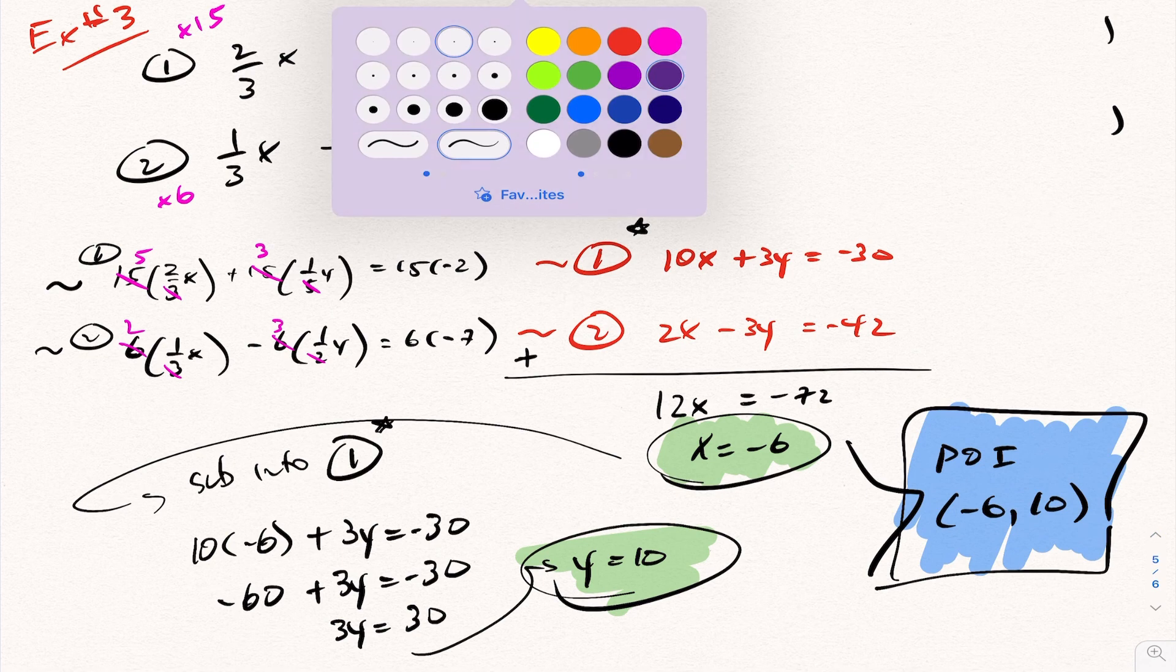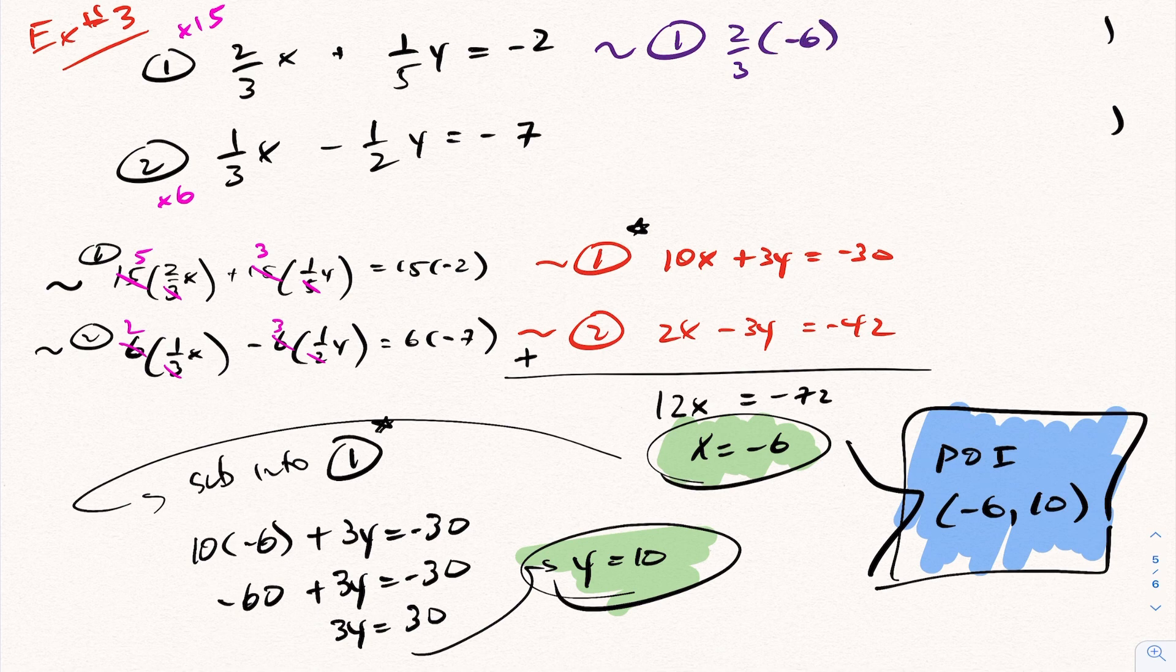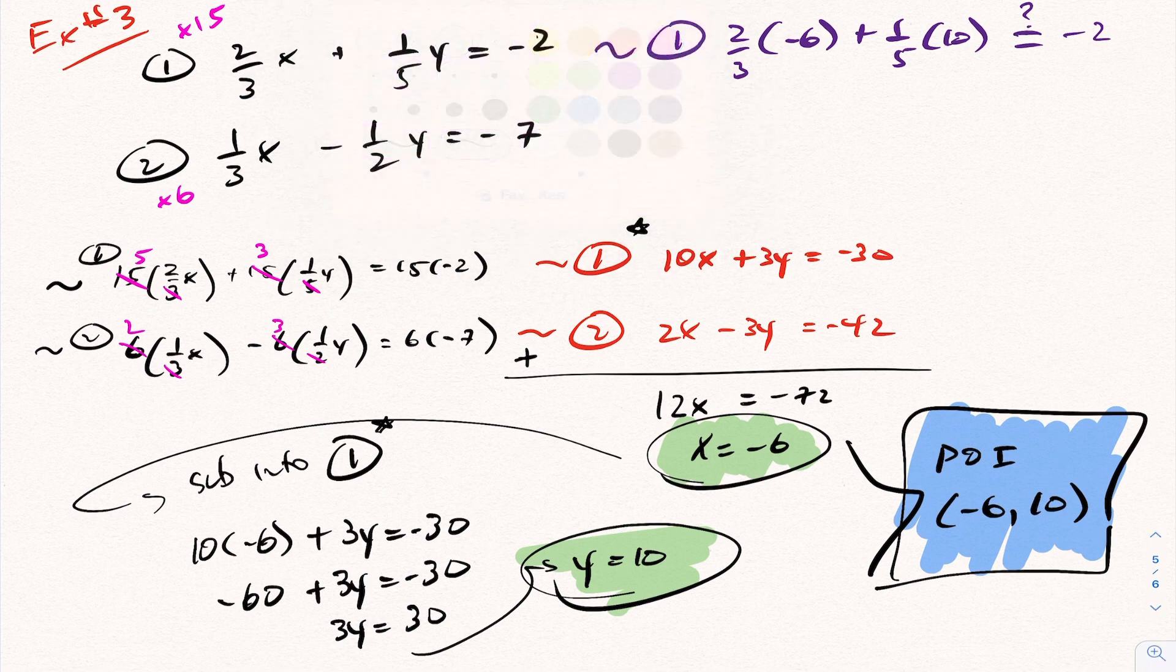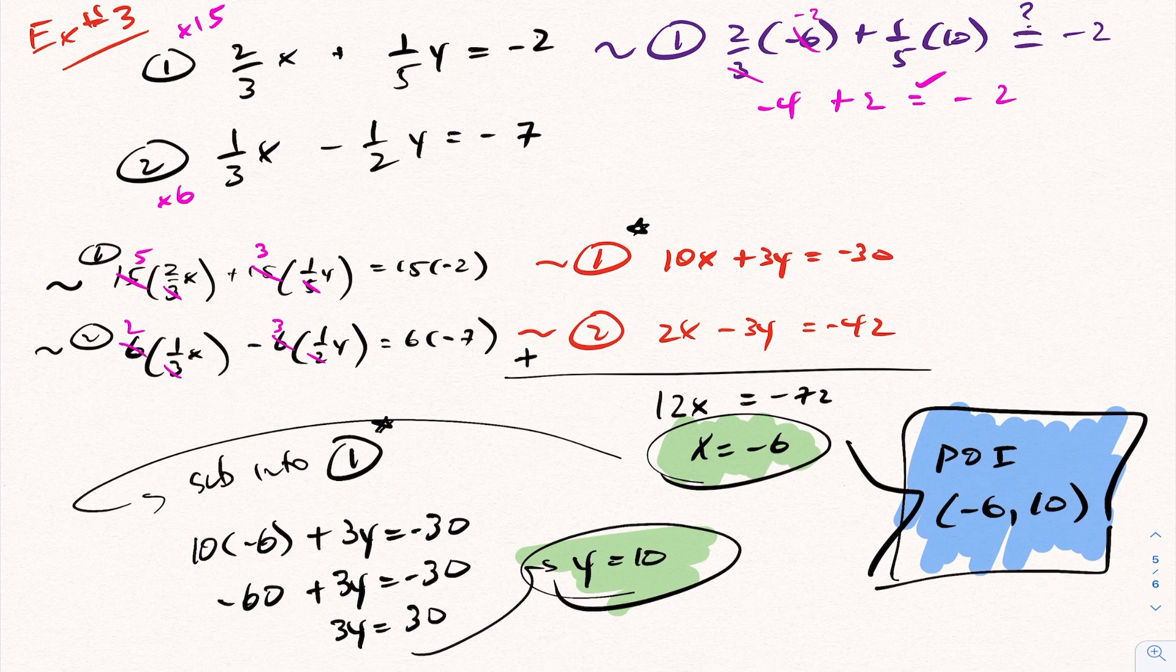So if you do a quick check here, I'm going to sub in this into my first equation. So it's going to be 2 thirds times negative 6 plus 1 fifth times 10. And I want to see whether that equals, the goal here, does this equal negative 2? Well this is going to be, if you simplify this a bit, this will become a negative 2. So this would be negative 4 plus 2 is negative 2. Yes. So it satisfies my first equation.